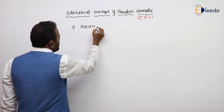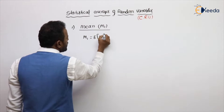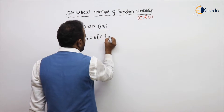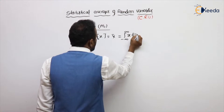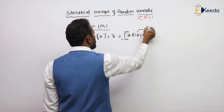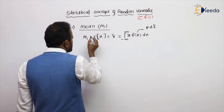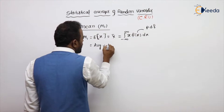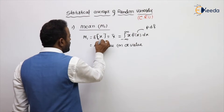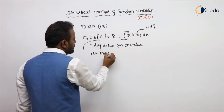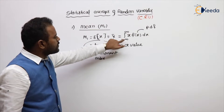Mean is denoted with m1. M1 is nothing but the expected value of x, also denoted as x-bar. The formula is the integral from minus infinity to plus infinity of x times f(x) dx, where f(x) is called the probability density function. This mean is also called the average value of a random variable, and it is also called the first moment or first order moment.